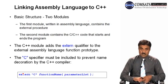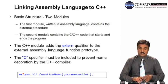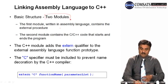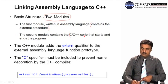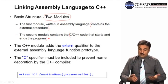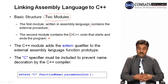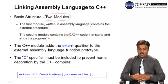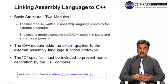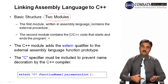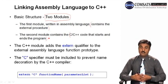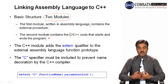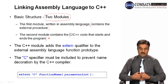The basic structure for linking assembly language to C++ includes two modules: the first module is written in assembly language and contains the external procedure; the second module contains the C/C++ code that starts and ends the program and calls that external assembly procedure. The alternative is inline assembly, but using separate functions or procedures in C or assembly is preferred for modularity, easier debugging, and clearer program structure.